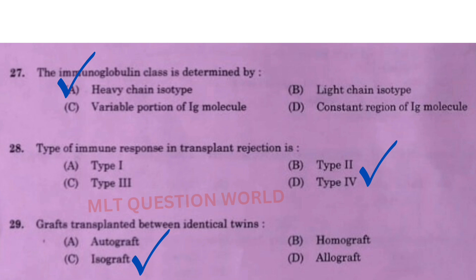Next question: Type of immune response in transplant rejection is option D, Type 4 reaction. Next question: A graft transplanted between identical twins — the right answer is option C, isograft.